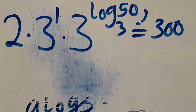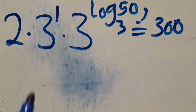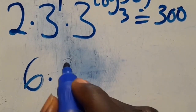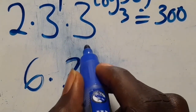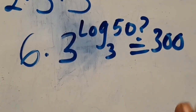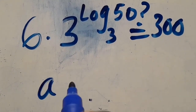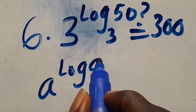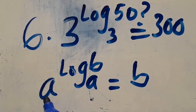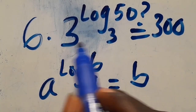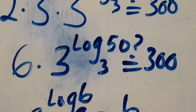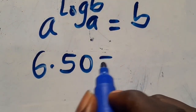By applying that law, we are going to have 2 times 3 to the power of 1 times 3 to the power of log of 50 in base 3 equals 300. Mind you, according to the laws of logarithm, a to the power of log of b in base a gives you back b, because they have the same base. Looking at this, they have the same base, so the output will be 50. Therefore, we are going to have 6 multiplied by 50.